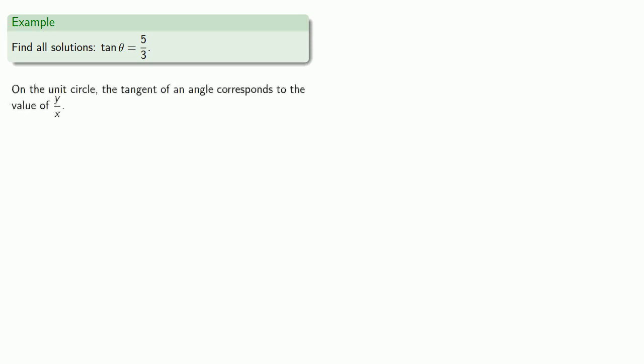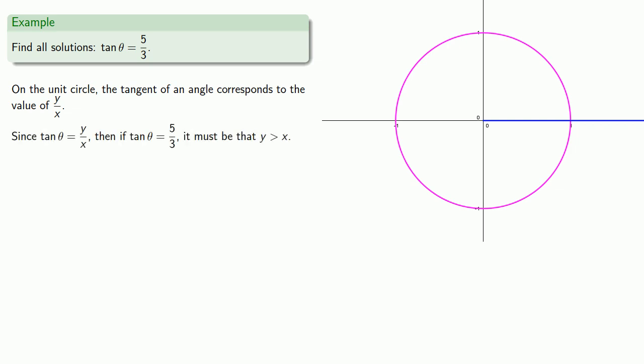So remember, on the unit circle, the tangent of an angle corresponds to the value of y over x. Now the picture is primarily a way to organize our information, so it doesn't have to be perfect. But it's nice if it's at least somewhat close. So let's think about our given information a little bit. Now since tangent of theta is equal to y over x, then if tangent of theta is 5 thirds, it must be that y is greater than x. So this point on the unit circle must be somewhere above the line y equals x, so maybe we'll drop it right around here.